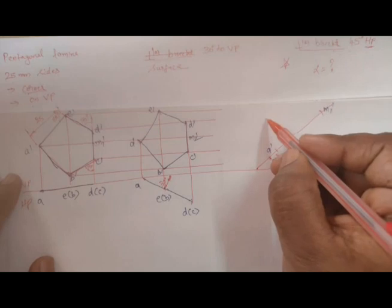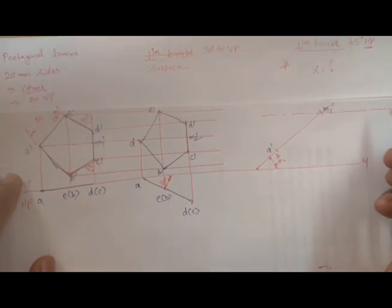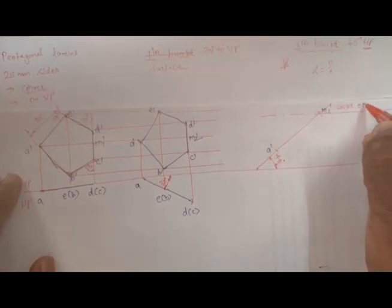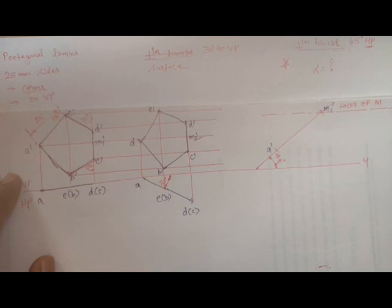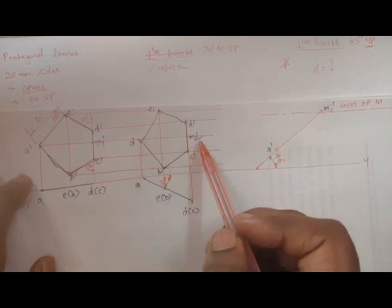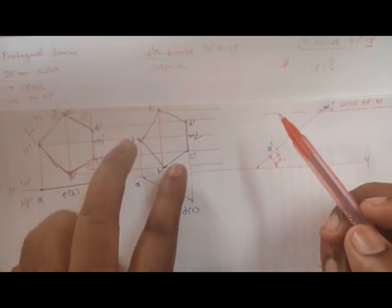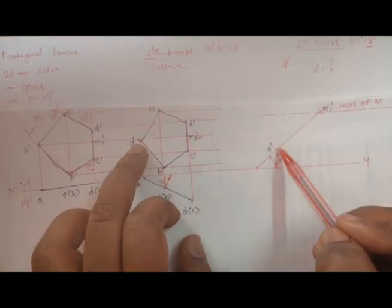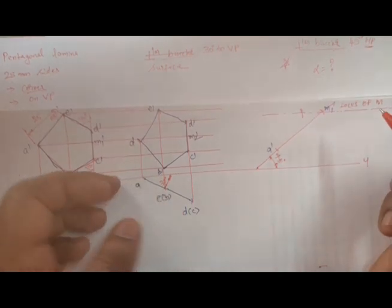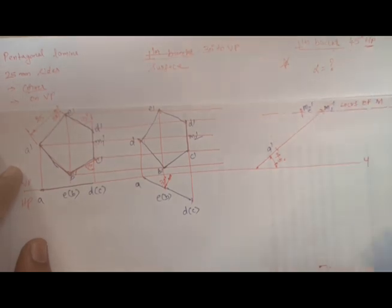Now I'm going to draw the locus line — locus of M, it should be capital letter M because it is an actual surface. I'm going to take the apparent length in order to find the apparent inclination, that is alpha — A dash to M2 dash from A. Cut an arc. Take these two distances and cut an arc by compass. This one is M2 dash.